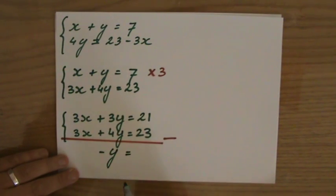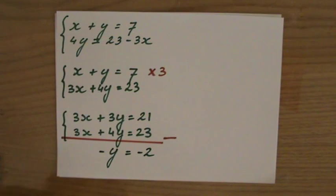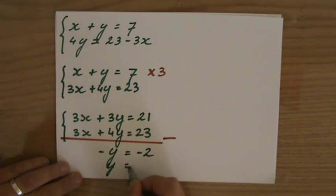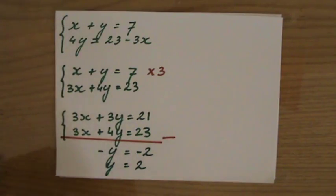Equals 21 minus 23, that is minus 2. I'm only interested in minus y. I want to know what y is, positive 1y, so that then is going to be 2. So I found the value of y, still got to find the value of x.